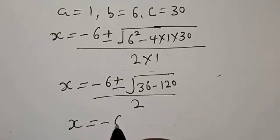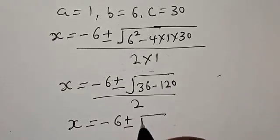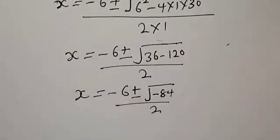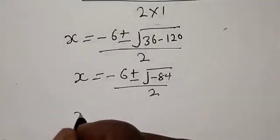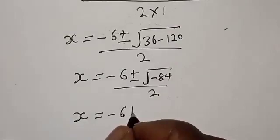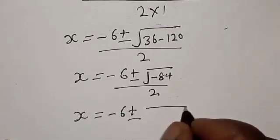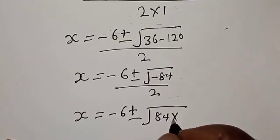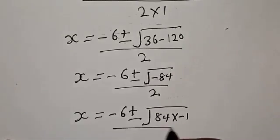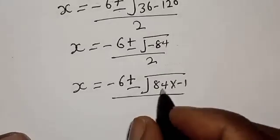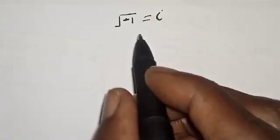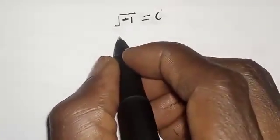Substituting: s equals minus 6 plus or minus square root of 36 minus 120, over 2. That gives s equals minus 6 plus or minus square root of minus 84, over 2. We can write this as square root of 84 times minus 1, and note that the square root of minus 1 equals i.